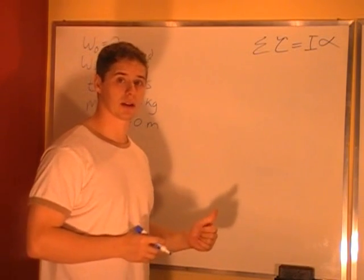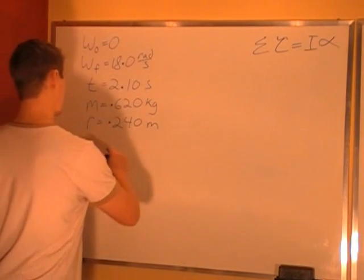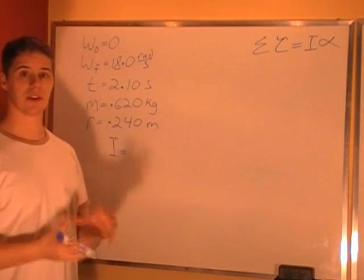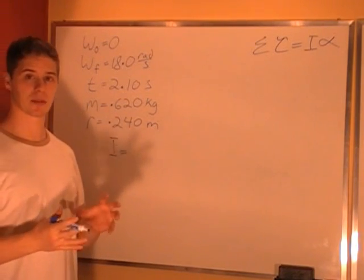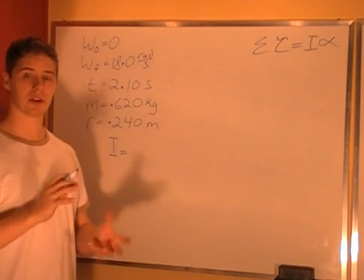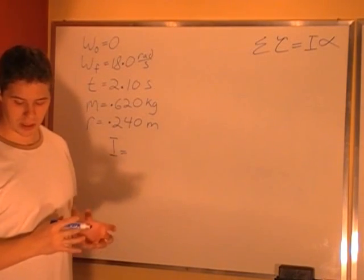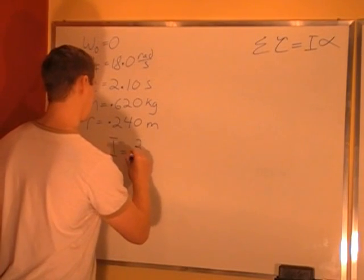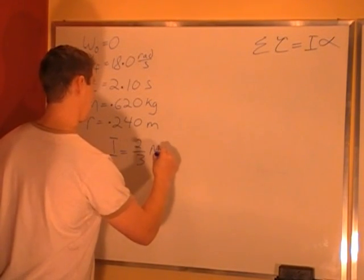First off we're going to calculate the moment of inertia. The moment of inertia for a basketball is a spherical shell. All the weight of a basketball is at the outside, so for a spherical shell, if we look at our formula sheet, the moment of inertia is 2/3 mr².